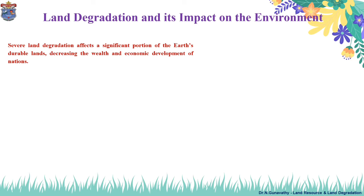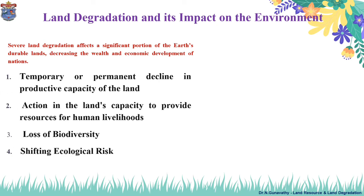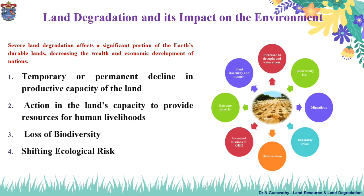Severe land degradation affects a significant portion of the Earth's arable lands, decreasing the wealth and economic development of nations. Some of its impacts on the environment include temporary or permanent decline in the productive capacity of the land, reduction in the land's capacity to provide resources for human livelihoods, loss of biodiversity, and shifting ecological risk.